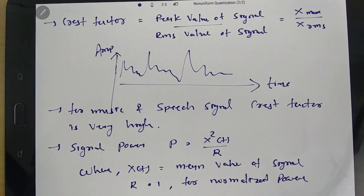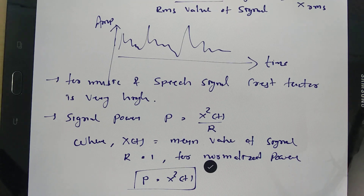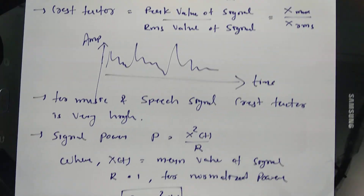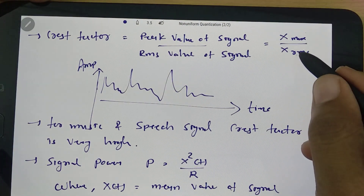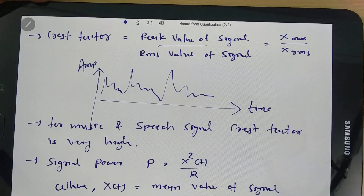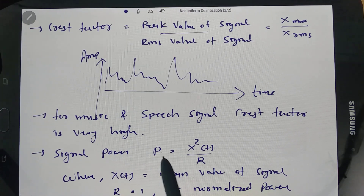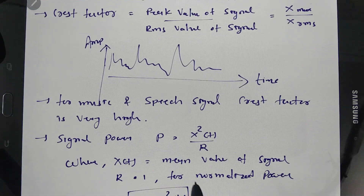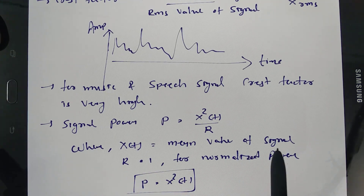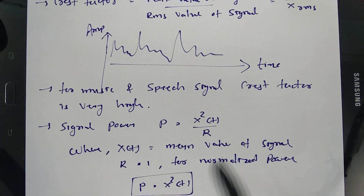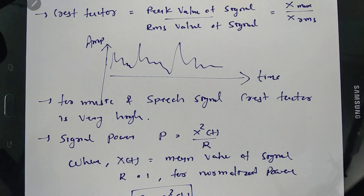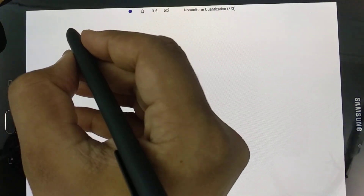So for normalized power, P equals x²(t). Now I will try to correlate this power with the crest factor, establishing a relationship between crest factor and signal power.